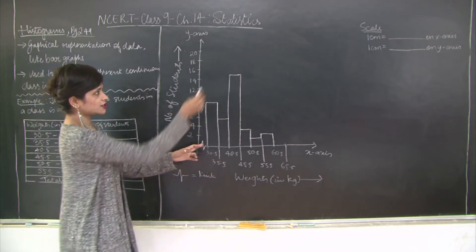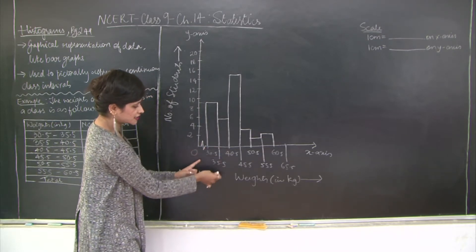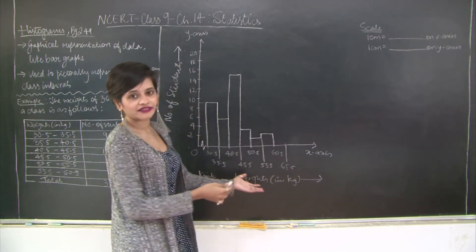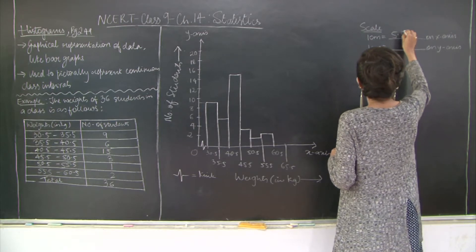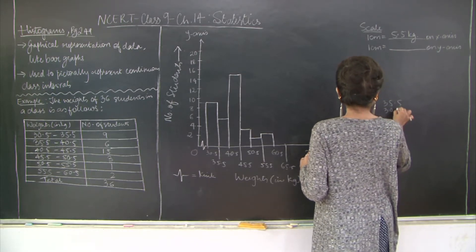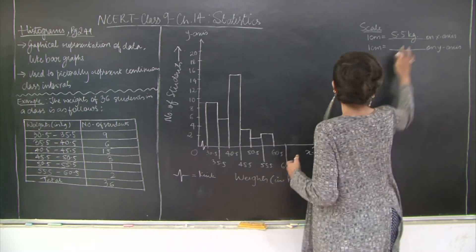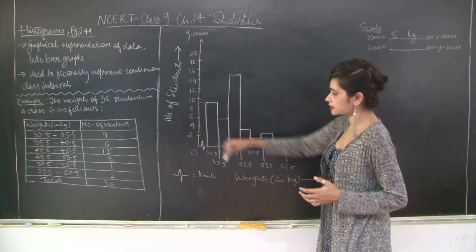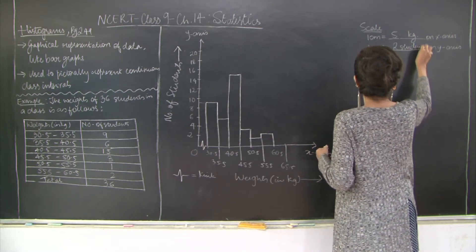How about the scale? The scale here: one centimeter is equal to what? What is the class size? It is 5, so 5 or 5.5 kilograms on the x-axis. Let me confirm: 35.5 and 30.5, the difference is 5 between the upper limit and lower limit.